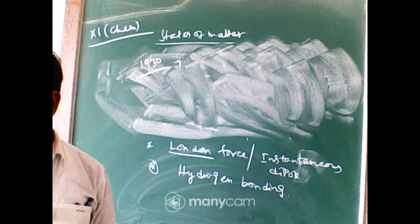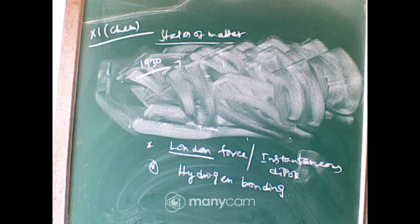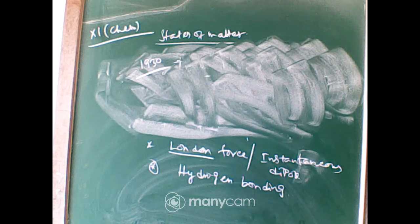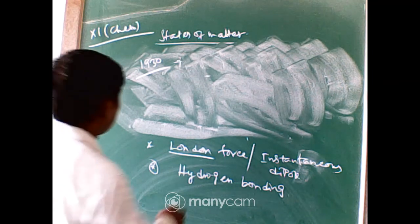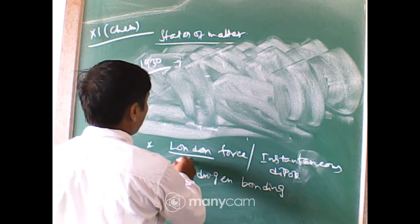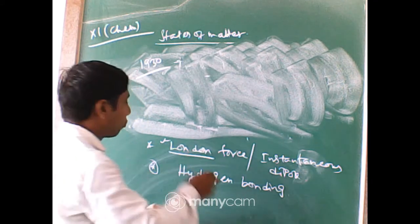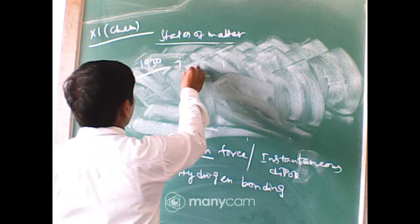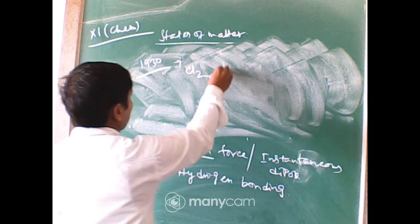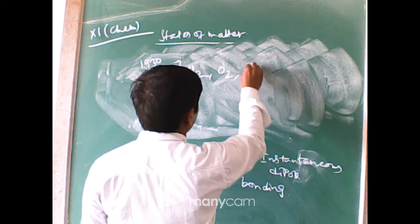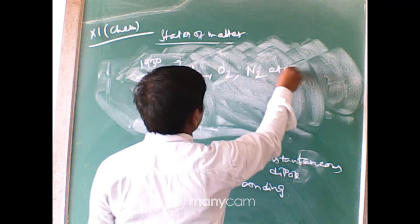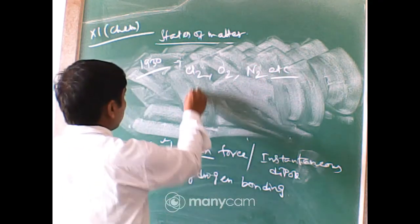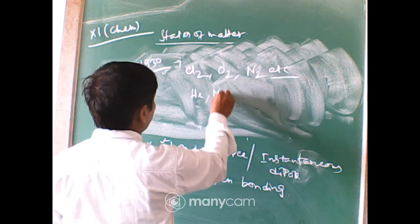London force applies to non-polar molecules such as chlorine, oxygen, nitrogen, helium, and neon. Based on the electronic concept of atomic structure, electrons form a charged cloud surrounding the positive nucleus.